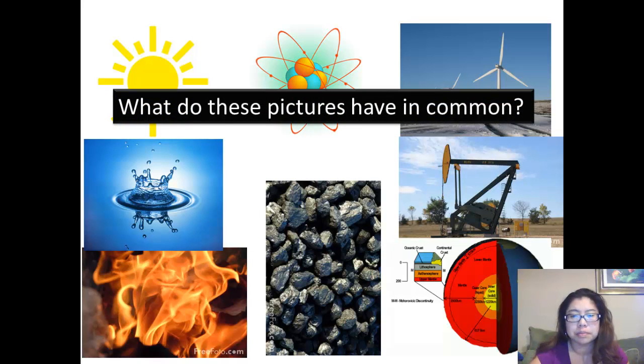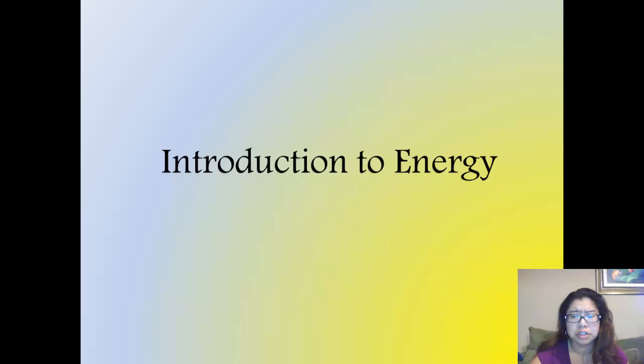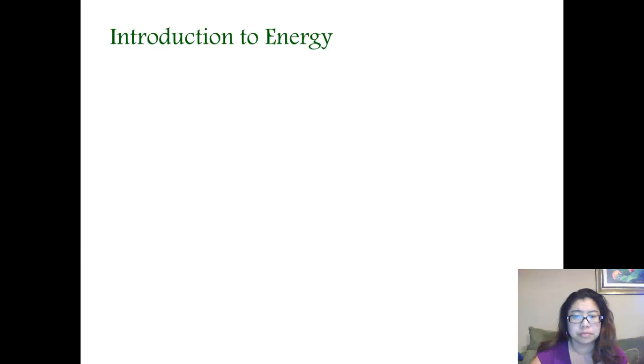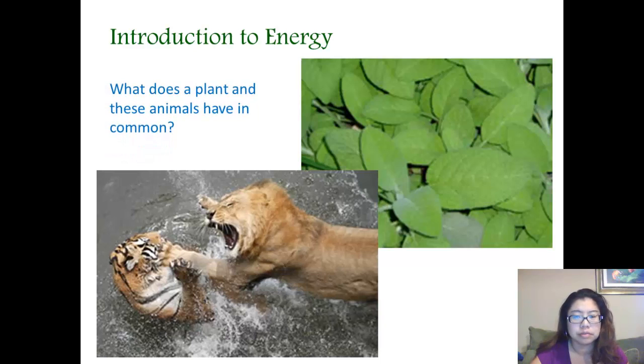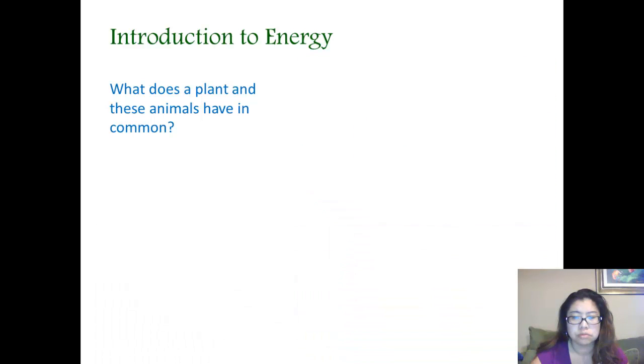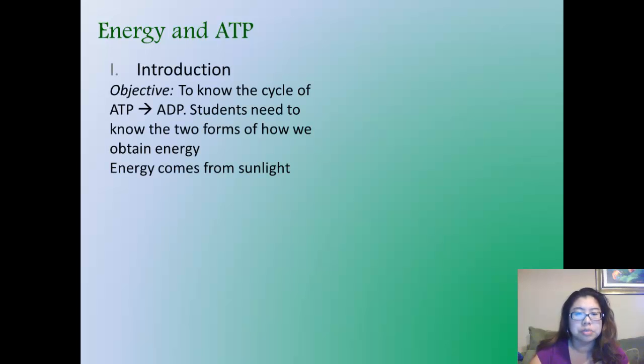So what do these pictures have in common? They have energy. We're going to start our unit introduction to energy on energy and ATP. The objective today is that students know the cycle that ATP goes to ADP, and students need to know that there are two forms in how we obtain energy. Energy comes from the sunlight.